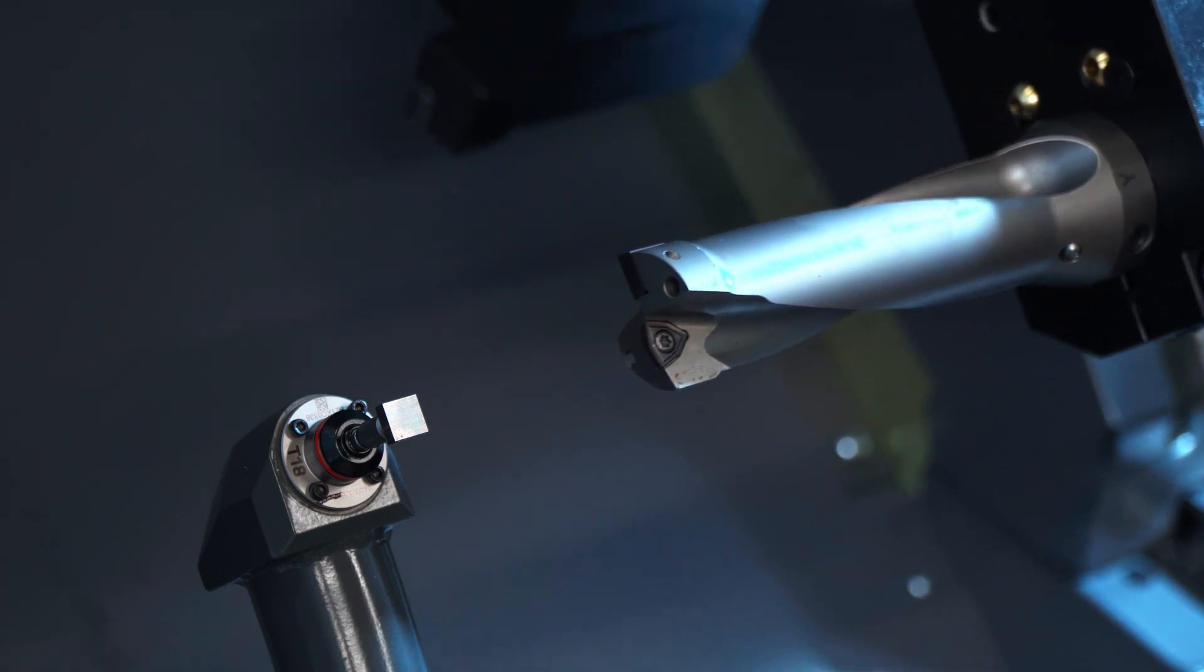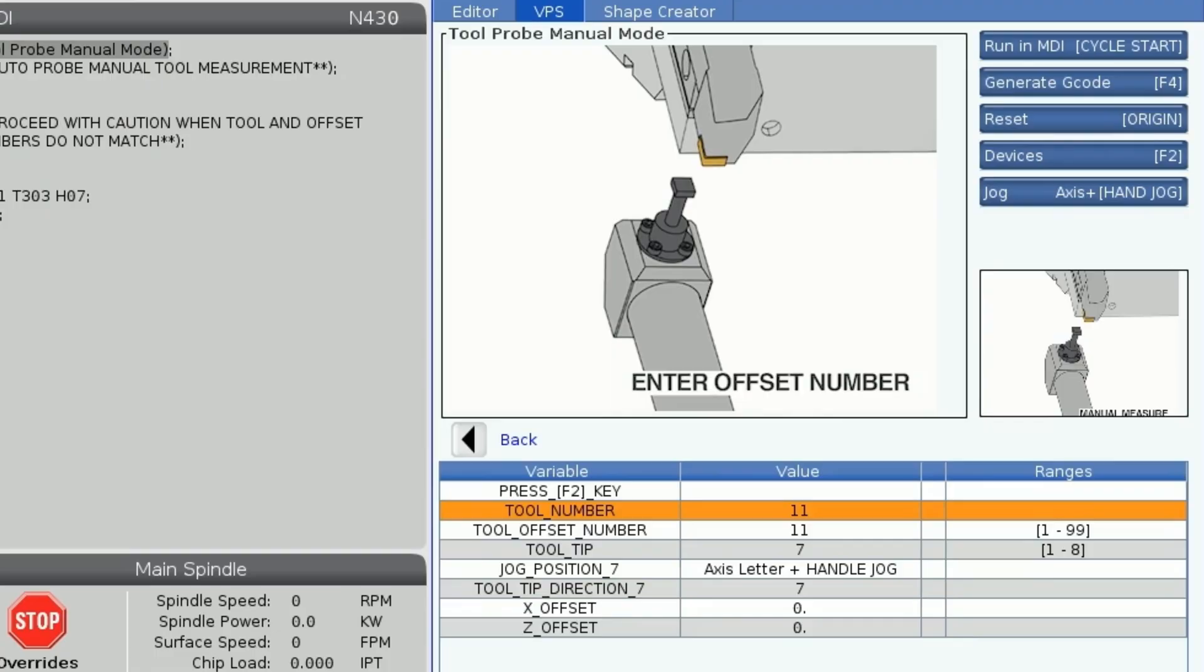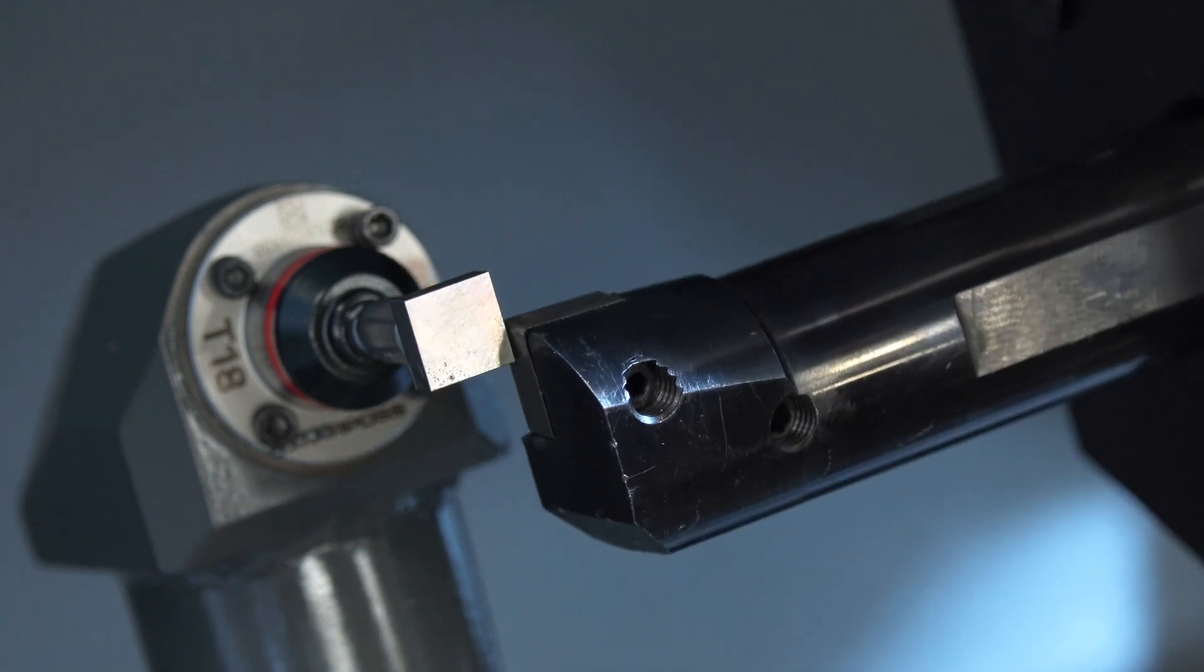On to our final tool. We back up again for clearance, index the tool 11, check that our entries are correct. Now we'll use tip direction 2 for this boring bar insert. Jog into the probe and press cycle start.